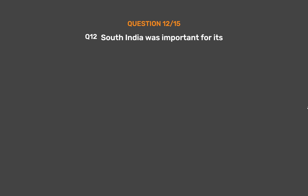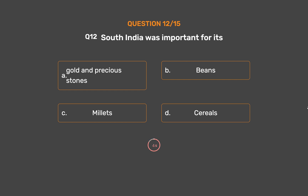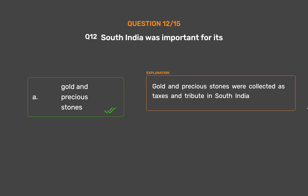Question No. 12. South India was important for its: Option A: Gold and precious stones. Option B: Beans. Option C: Millets. Option D: Cereals. The correct answer is Option A: Gold and precious stones. Gold and precious stones were collected as taxes and tribute in South India.